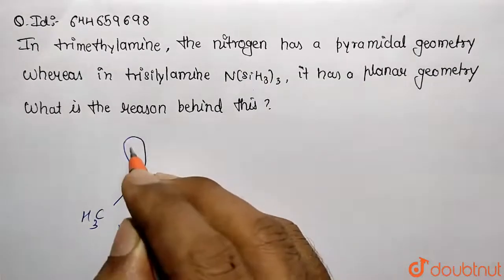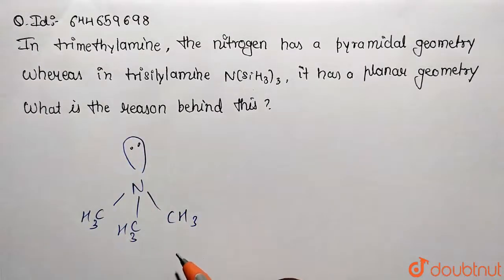And it is carrying a lone pair, so this is the molecule. And hybridization, if you look after this, is one, two, three sigma bonds and one lone pair. That means four orbital space you require over here.